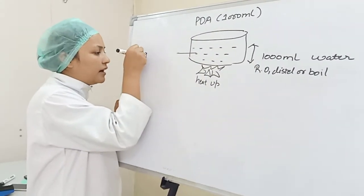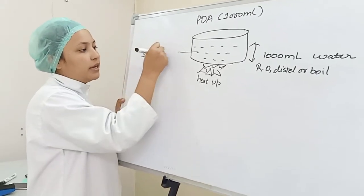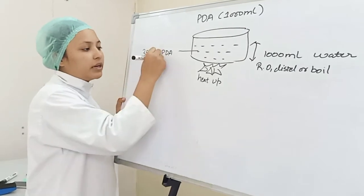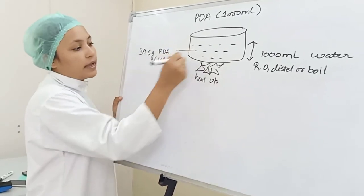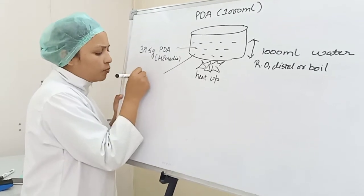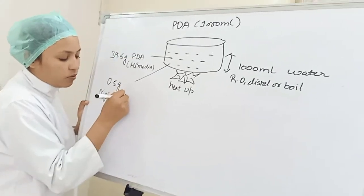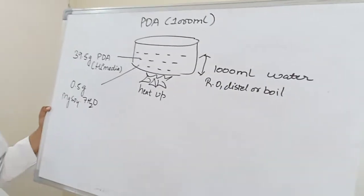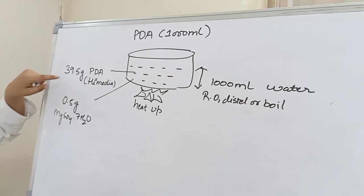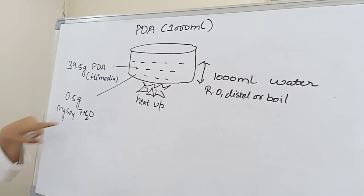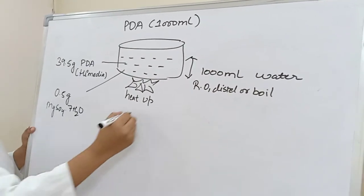We will add 39.5 gram of PDA powder and 0.5 gram of MgSO4.7H2O, it means Magnesium Sulphate.